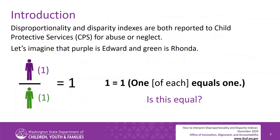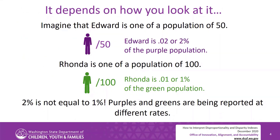Introduction. Disproportionality and disparity indexes are both reported to Child Protective Services, CPS, for abuse or neglect. Let's imagine that purple is Edward and green is Rhonda. One of each equals one — but is this equal? It depends on how you look at it. Edward is one of a population of 50, so he is 0.02, or 2%, of the purple population. Rhonda is one of a population of 100, so she is 0.01, or 1%, of the green population. 2% is not equal to 1% — purples and greens are being reported at different rates.